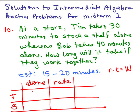So alone Tim takes 30 minutes, so his rate is 1/30th. Bob takes 40 minutes alone, so Bob's rate is 1/40th. He only gets a 40th done in a minute. That's why Tim gets done quicker.